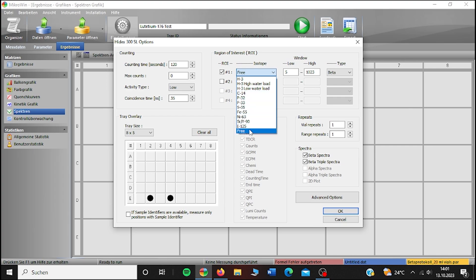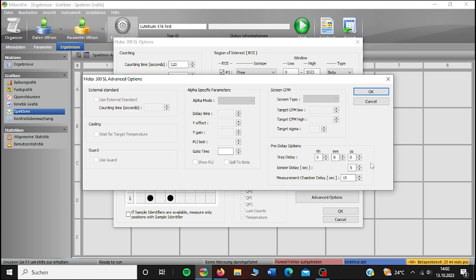For type, it's beta, you get the beta counts, and for beta triple, you get the triple coincidences separately. There are 1023 measurement channels, and it will automatically correct the number if you accidentally enter too many. Under advanced options, you will find the tray delay, which is how long the tray sits in the dark without being measured to let photoluminescence decay. 15 minutes is sufficient.